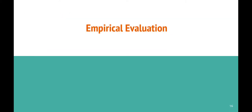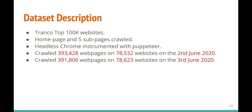In the paper we present an empirical evaluation based on a crawl of the top 100,000 websites from the Tranco list. We visited not only the home page but also five sub-pages per website, using headless Chrome instrumented with Puppeteer. We crawled approximately 393,000 web pages on 78,000 websites on June 2nd, 2020, and about 391,000 web pages on 78,623 websites on June 3rd, 2020 — both crawls 24 hours apart.